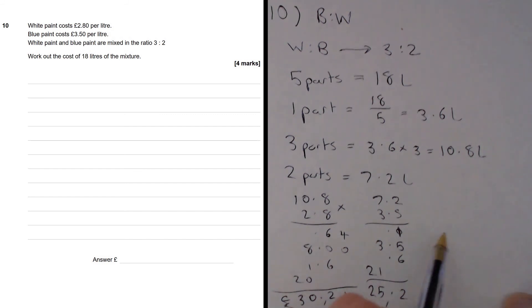So we just need to add these guys up and if we do £30.24 and add that to £25.20 then we are going to get £55.44. That's the answer.